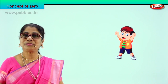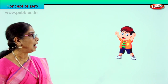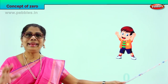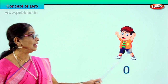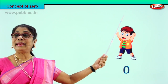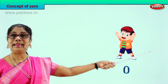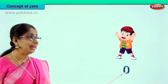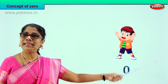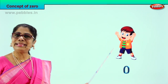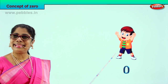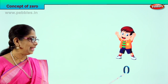How many bubbles are left? Nothing. Look at the boy — he's looking at his hand, nothing left. So what do we write? Zero. Empty, his hands are empty. Nothing. Zero.